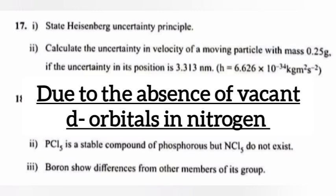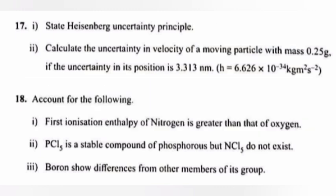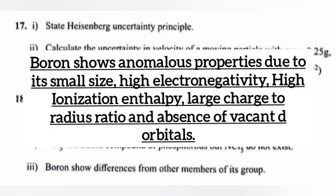Part 3: Boron shows differences from other members of its group. Answer: Boron shows anomalous properties due to its small size, high electronegativity, high ionization enthalpy, large charge to radius ratio, and absence of vacant d orbitals.